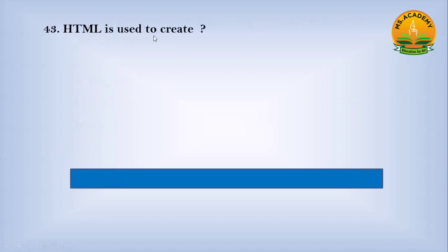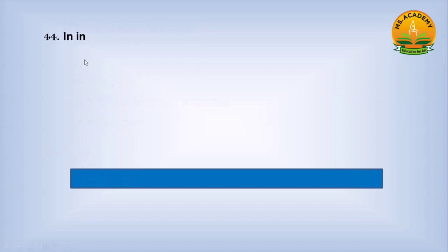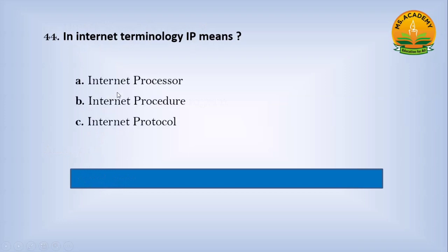HTML is used to create — option A: web page, option B: machine language program, option C: web server. Answer: A — web page. In internet terminology, IP means — option A: internet processor, option B: internet procedure, option C: internet protocol. Answer: C — internet protocol.